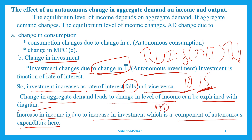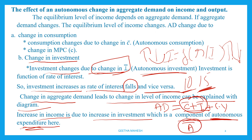Aggregate demand is equal to C-bar plus I-bar plus cY. Diagrammatically, AD equals A-bar plus cY, where A-bar is autonomous expenditure combining autonomous consumption and autonomous investment. Investment is a component of autonomous expenditure. When investment changes, income changes.